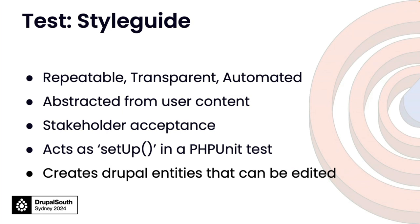But we don't have to rely on user content that they change and break our tests anymore. We build all this as part of our testing system — it's programmatically created, automated as part of CI/CD, changes are detected and automatically updated to pages, and it doesn't rely on user content.